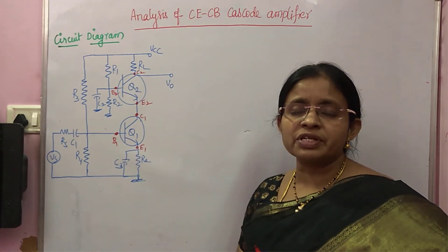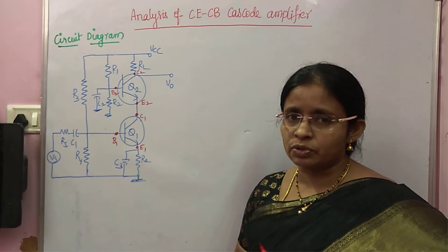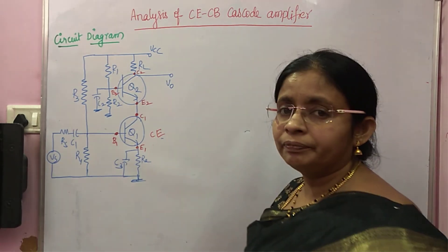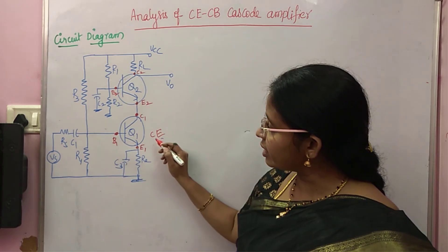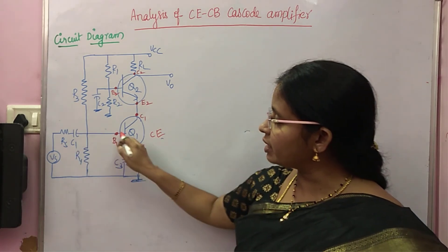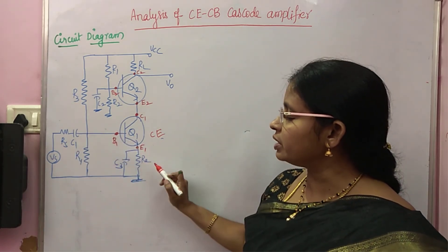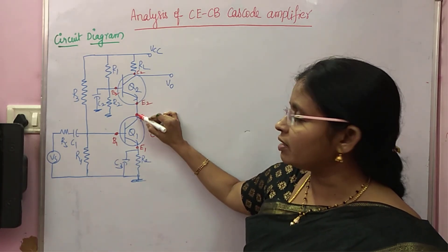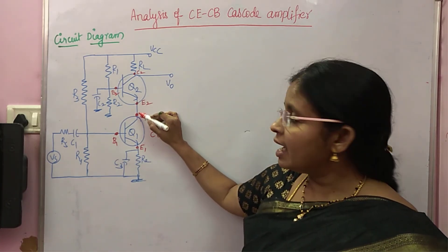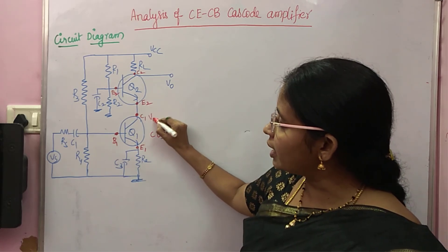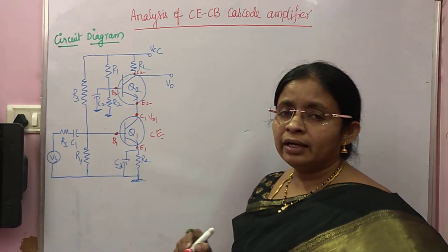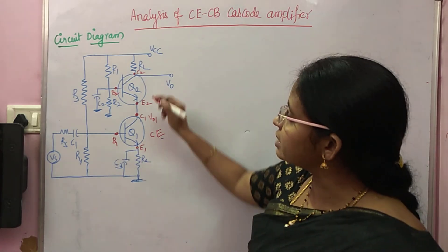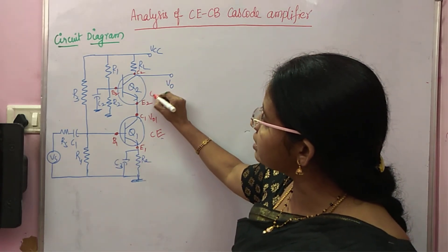This is the circuit diagram of CE-CB cascode amplifier. The first stage is CE — input is given at the base, the emitter is grounded through RE and C3, and at C1 we are collecting the output. This output V01 is given as input for the next stage.